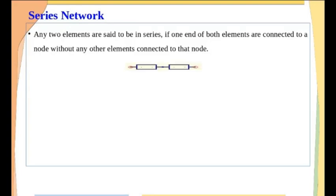Here, if you see, there are two elements — this is the first element and this is the second element. One terminal of the first element is connected to another terminal of the second element, whereas the other terminals of both elements are left open. They might be connected to some other terminals or elements. But for element one and element two to be in series, there should not be any other elements at this node.